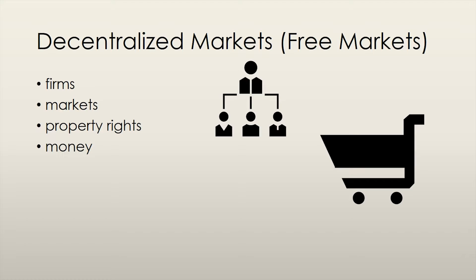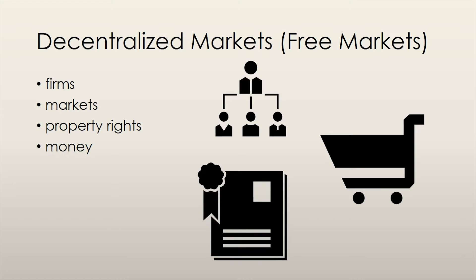The website allows buyers and sellers from around the world to connect with each other. Markets, however, can only work when property rights exist. Property rights are the social arrangements that govern the ownership, use, and disposal of anything that people value. The term real property rights refers to rights of ownership to land, building, and machinery. Financial property includes stocks, bonds, and money in the bank.